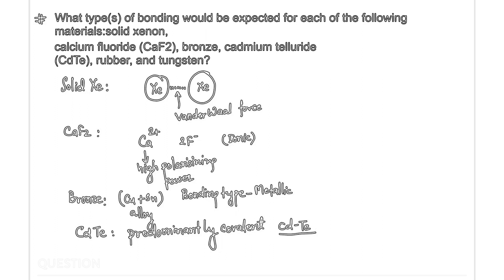Coming to the next, that is rubber. In rubber, basically bonding is covalent with slight van der Waals forces also there between the various chains. So it is covalent. Now, the last is tungsten, that is W. That is a metal, so the bonding will be metallic bonding.